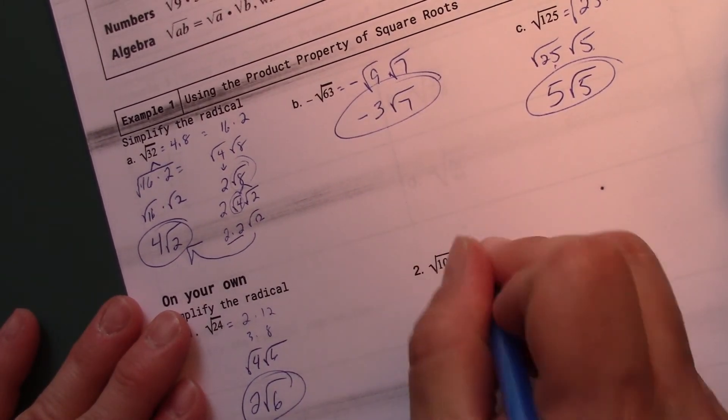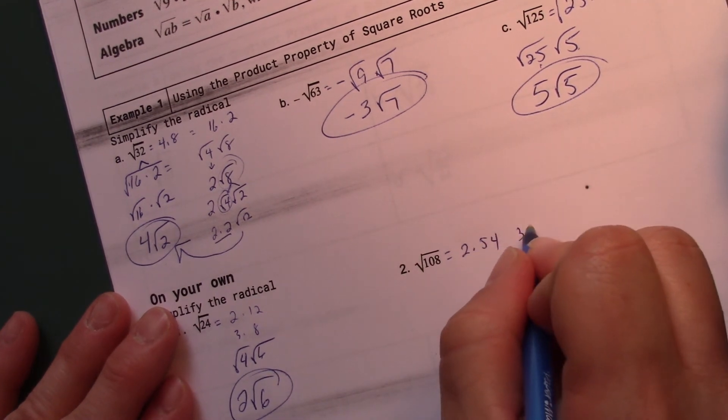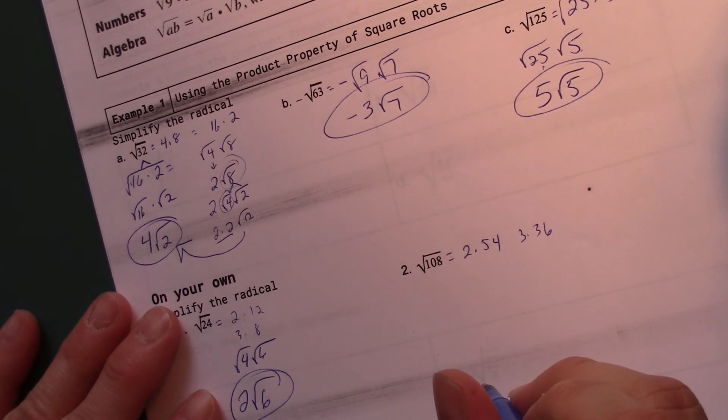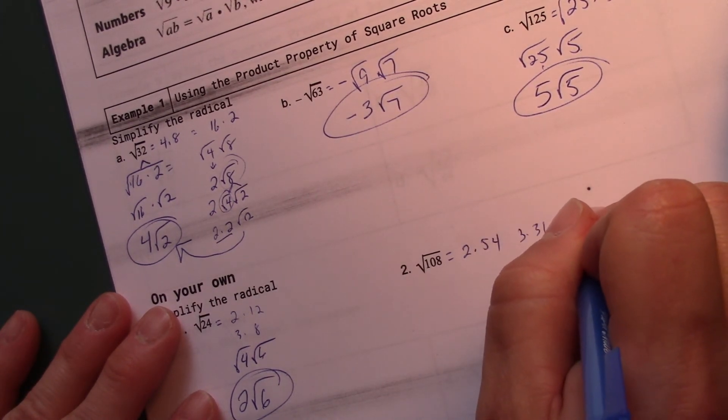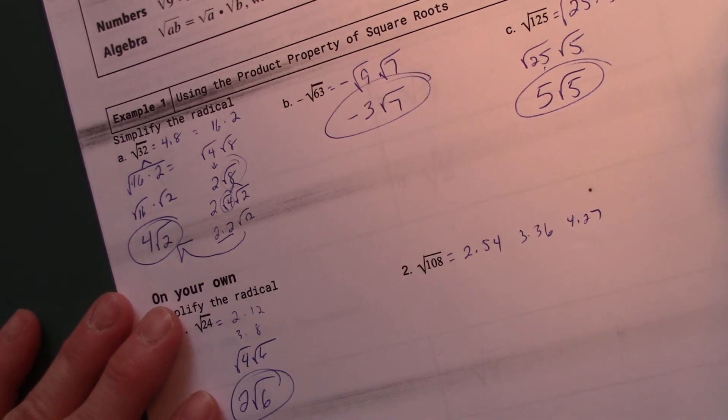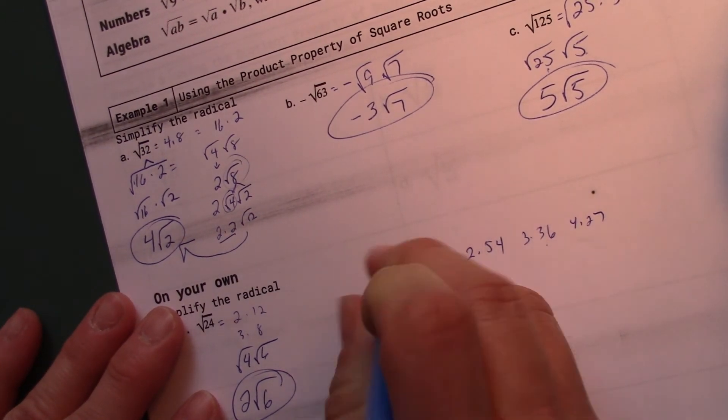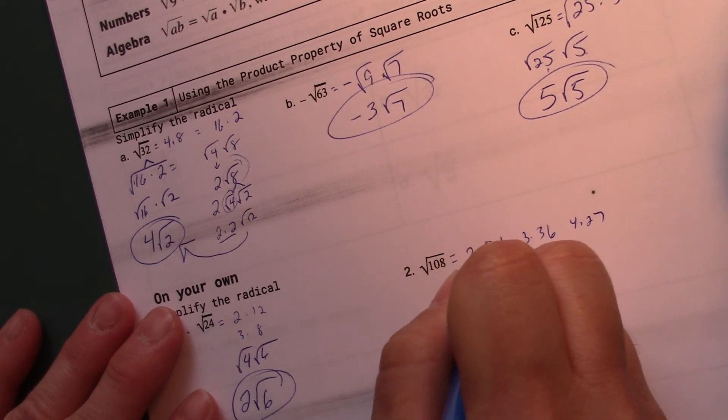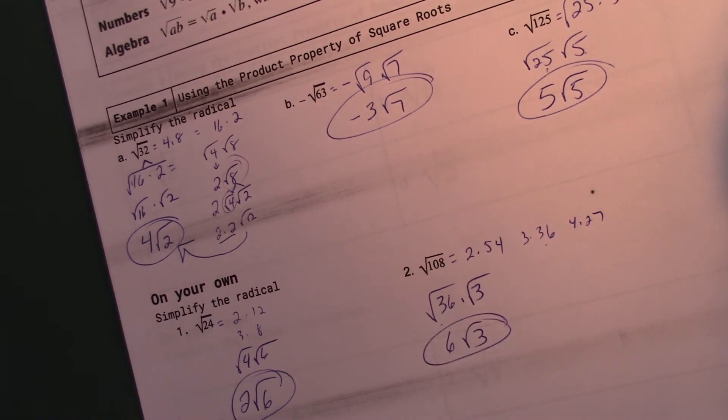And the last one. So I get 2 times 54. I get 3 times 36. That's going to be the winner. I could also do 4 times 27, which I could do. But again, let me get this biggest number out of here. This is just 36 times 3. And I can square root of each one of those. This is 6 square root of 3. And that is that entire assignment.